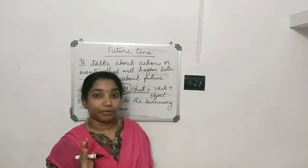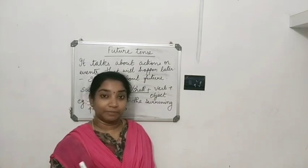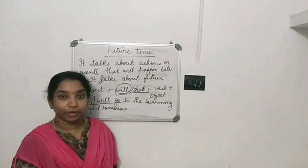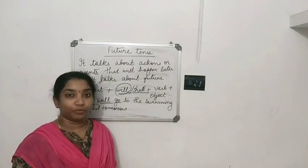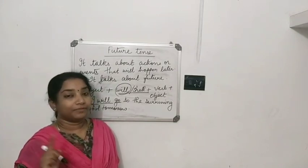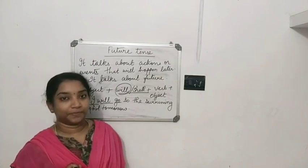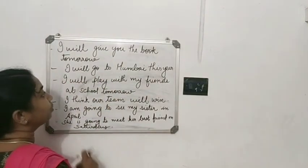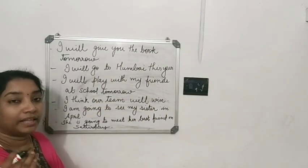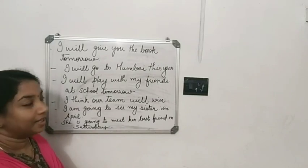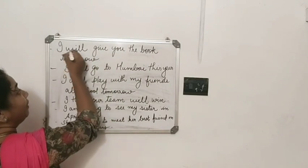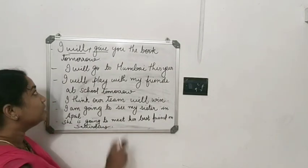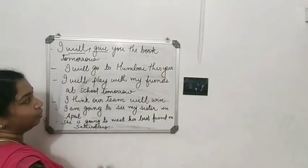Simple future tense always describes the action or event that takes place later. For example: I will give you the book tomorrow — the action is taking place later, so we use will plus the root form of the verb. Another example: I will go to Mumbai this year — the action is coming, it is happening later.